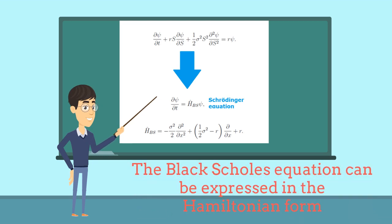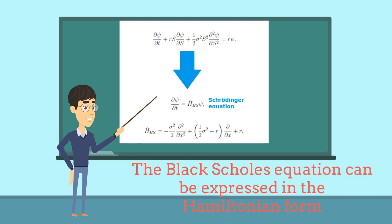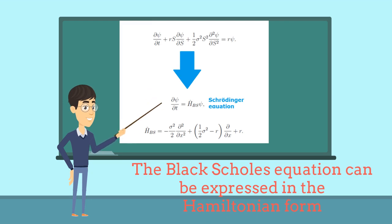The Black-Scholes equation is the most famous equation for understanding the basics about the stock market. It has a constant volatility and a constant interest rate. Interestingly, we can express the Black-Scholes equation as an eigenvalue problem with its corresponding Hamiltonian, and it then takes the form of the Schrödinger equation in quantum mechanics.